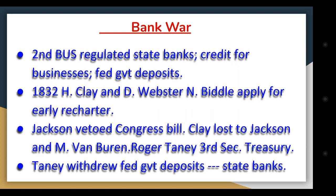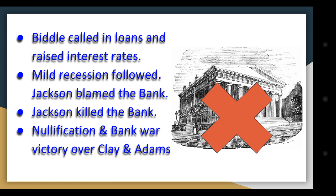These were called 'pet banks.' They started with around six banks and then grew to three hundred pet banks, virtually guaranteeing the bank would be destroyed completely. Biddle, the president of the bank, retaliated by calling in loans and raising interest rates, which led to a mild recession that would later contribute to a financial crisis in 1836–37 during Martin Van Buren's presidency. Jackson blamed the bank and made sure no rechartering bill would be approved, killing the bank entirely. By doing so, along with the nullification crisis, Jackson considered that he had achieved a victory over Clay and Adams.